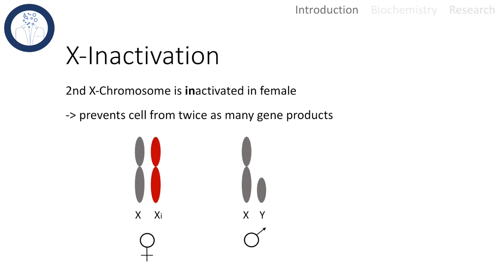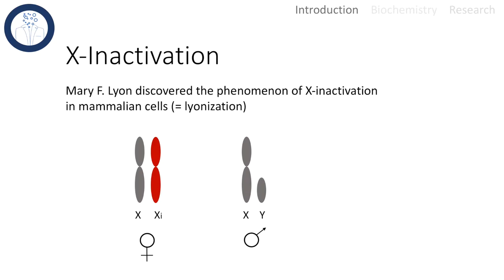Xi symbolizes the inactivated X chromosome. This whole process was first discovered by the geneticist Mary Lyon, and it takes place in female mammalian somatic cells. Due to its explorer, X inactivation is sometimes also called Lyonization.